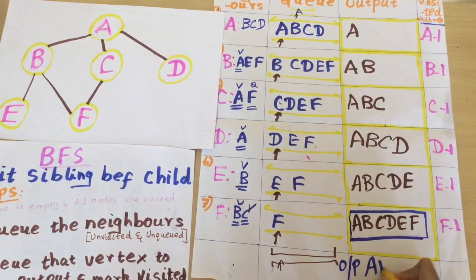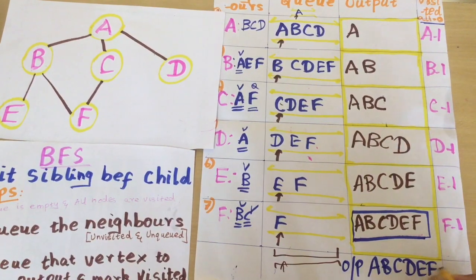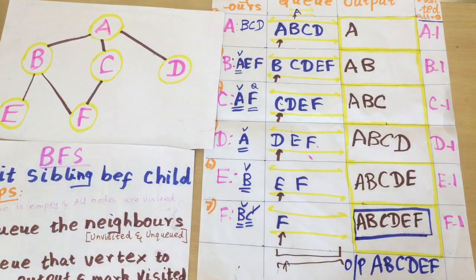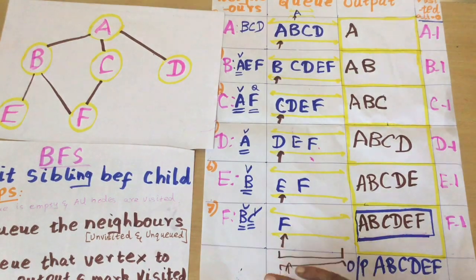I have concluded the problem. My final output is A, B, C, D, E, F. In this order I am traversing my graph using BFS. Why did I conclude? Because I have visited all the nodes and my queue has become empty. Hope you are clear with BFS.